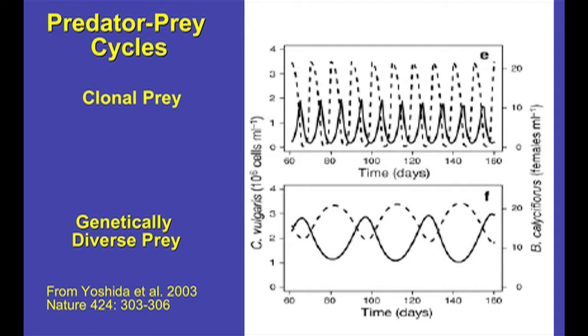After the predator population declines for a period of time, the prey population can recover, and so the prey population will increase in abundance, and as they increase in abundance after a certain time lag, the predator population can recover as well. And so what you see over the course of time is this oscillation of prey increasing in abundance, then predators following that increase, and they increase in abundance, then the predators overeat their resources and the prey decline, and later the predators decline, and so on. So you've got a regular oscillation up and down.